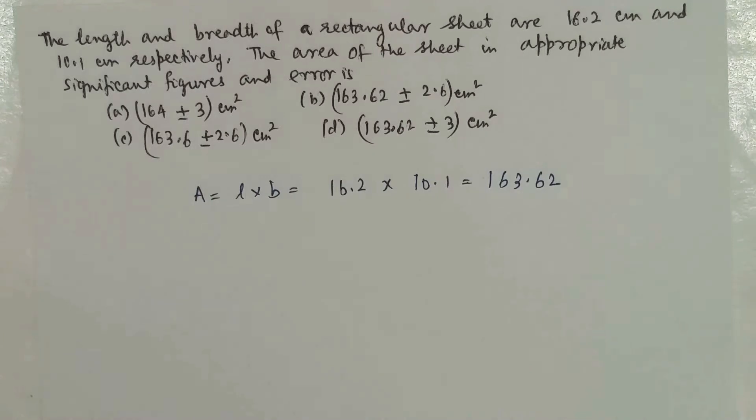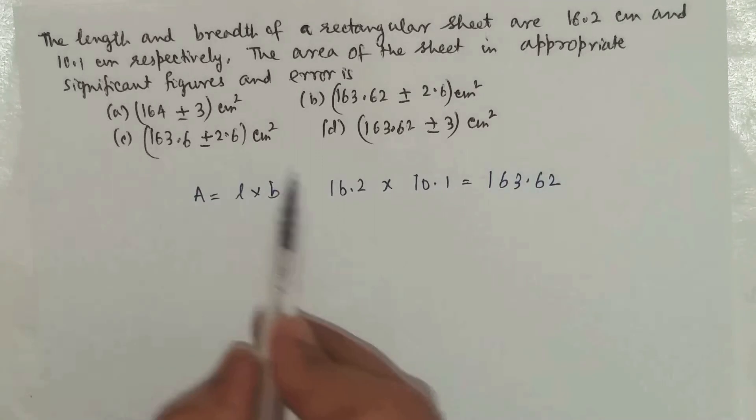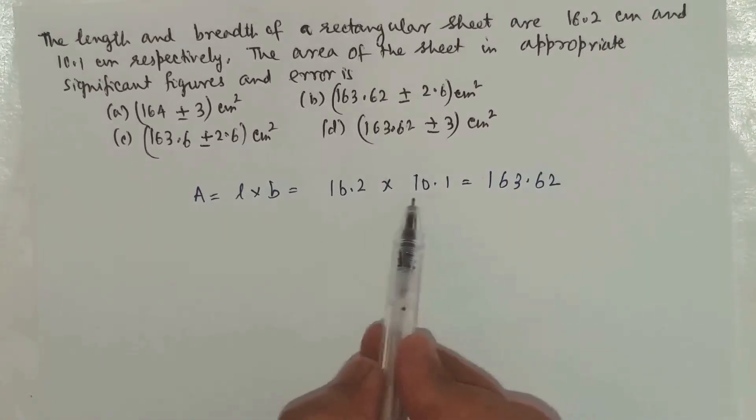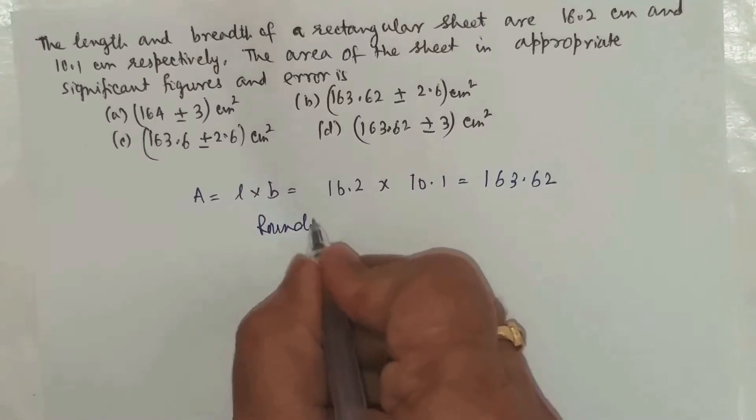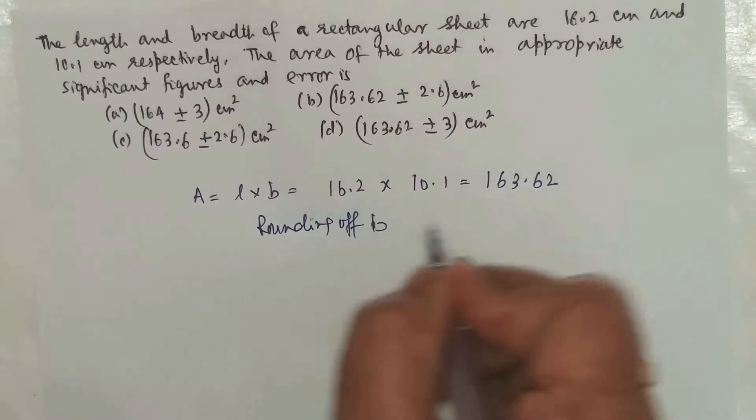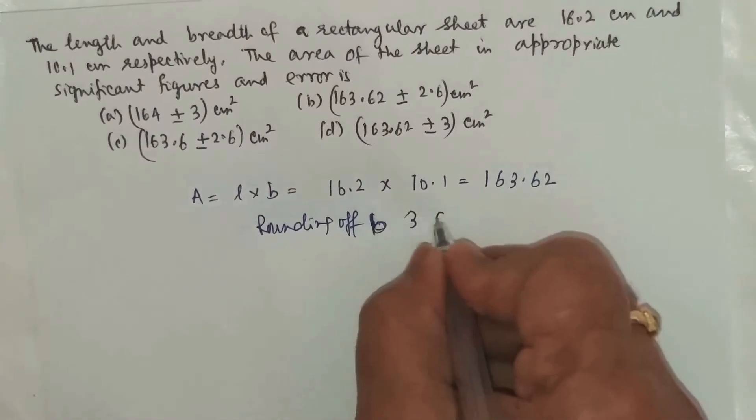Now we have to round it off to the appropriate number of significant figures. The length has 3 significant figures and the breadth also has 3 significant figures. So we're rounding off to 3 significant figures.